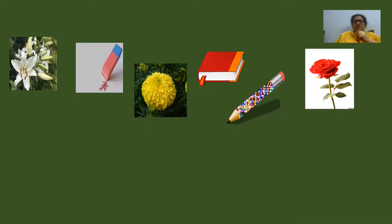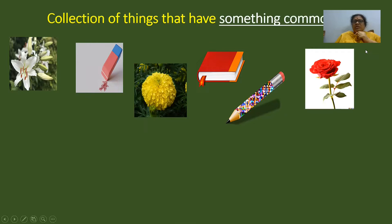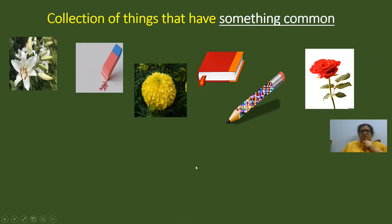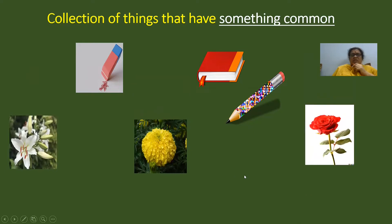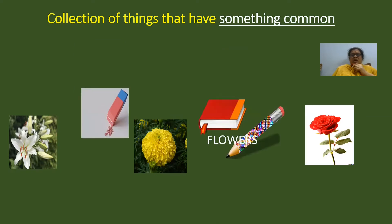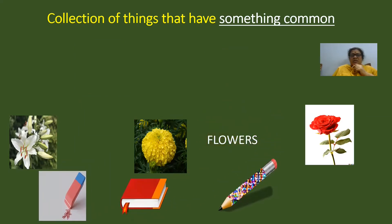So what is a set? See on the screen you can observe some objects. Is there any variation between the objects? Is there any common thing between the objects? Can you classify these objects? Yes, we can classify them. These three we can save with one word — we can name these three figures as flowers, and we can categorize these items as stationary items. So like this, there is a common thing between the objects on the screen.